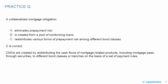C is correct. We looked at CMOs in the previous LOS, and this question fits as a continuation on prepayment risk. CMOs are created by redistributing the cash flows of mortgage-related products, including mortgage pass-through securities, to different bond classes or tranches based on a set of prepayment rules. So a collateralized mortgage obligation redistributes various forms of prepayment risk among different bond classes.